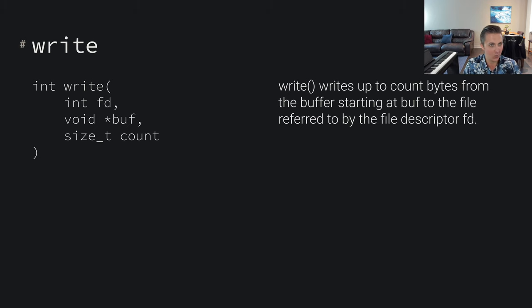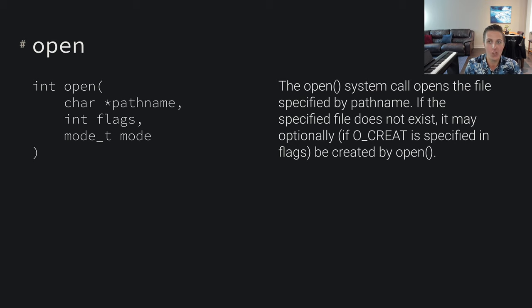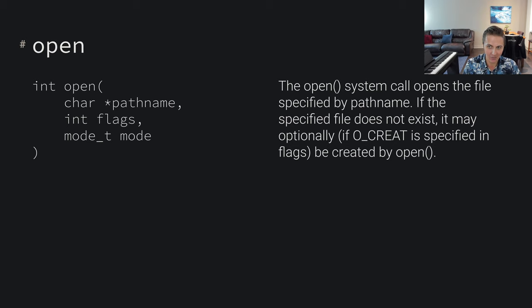We've got the read system call, the write system call - reads data, writes data to a file. We've also got how do we get one of these file descriptor things within these system calls. We've got the open system call, and what it does is it opens some file specified by pathname. If the specified file does not exist, it may optionally, if create is specified in the flags, be created by open. This allows us to either create a file or open it depending on the options we supply. These are a few examples of system calls that have to do with file management.